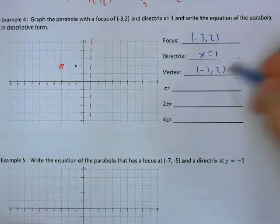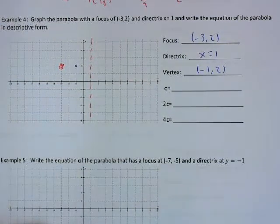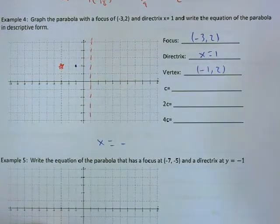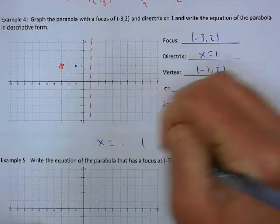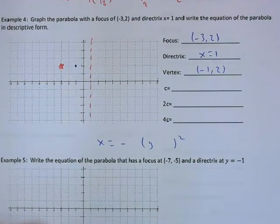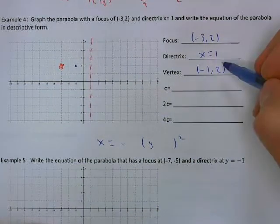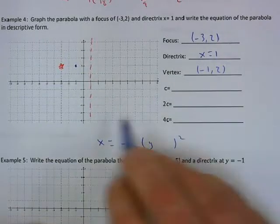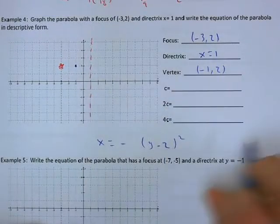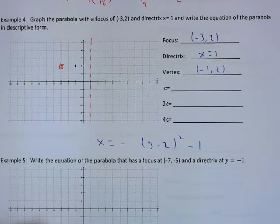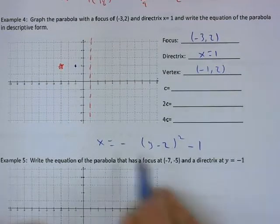Knowing the vertex, we can build most of our equation: x = (negative a)(y - 2)² + (-1). When y = 2, the squared part is zero and x = -1, matching our vertex. We still need the a value. To find it, we'll use c = 1/(4a) and plug in our known focal length c.